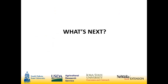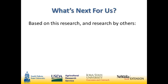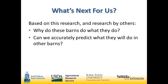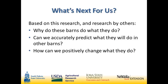That brings us to what's next. With the research collected through this project and additional research you'll hear about today, we want to pull it together and ask: why do these barns do what they do? We have some theories, but we need to work through calculations to really shore up those relationships. If we can figure out those relationships, can we accurately predict what will happen in another barn? Monitoring is expensive — we don't want to monitor every single barn to get accurate emission numbers, so we want to make predictions based on past measurements. Ultimately, this all culminates in modeling, which is the next step for us on the research side.